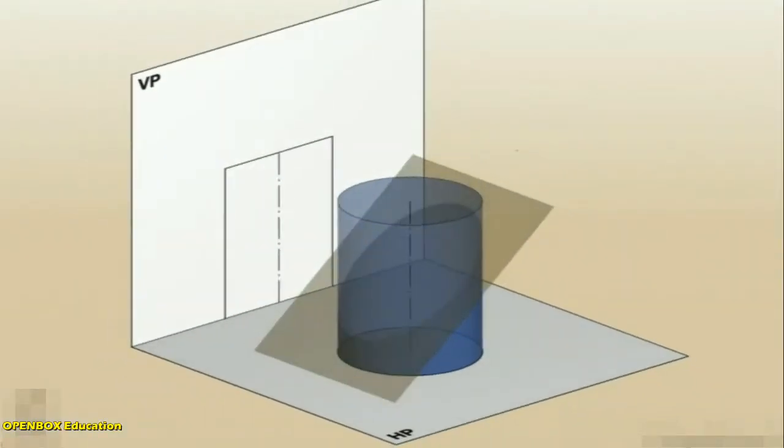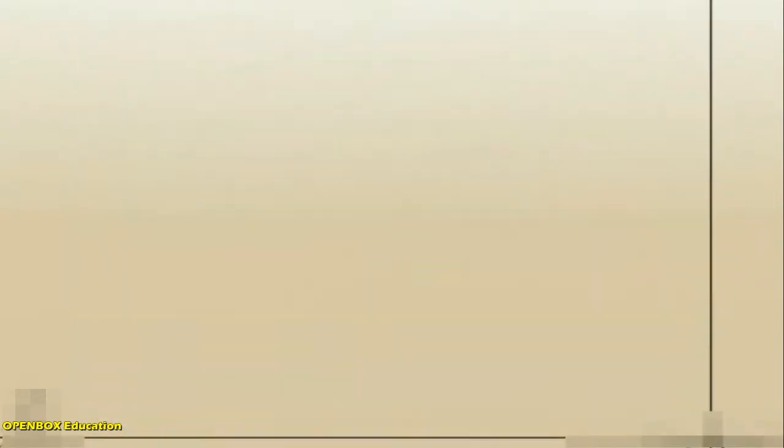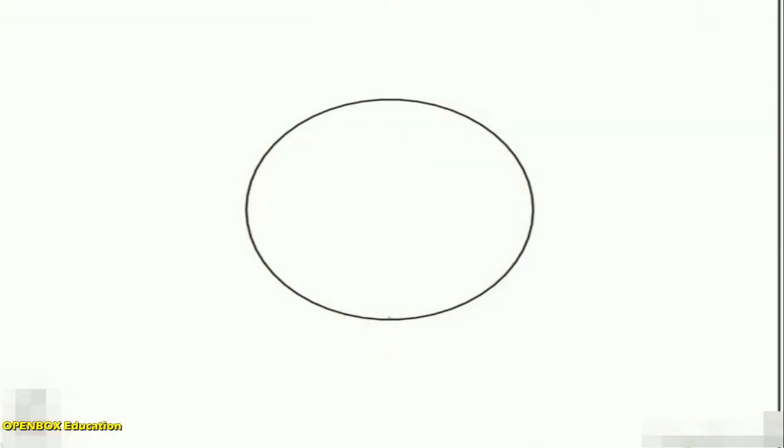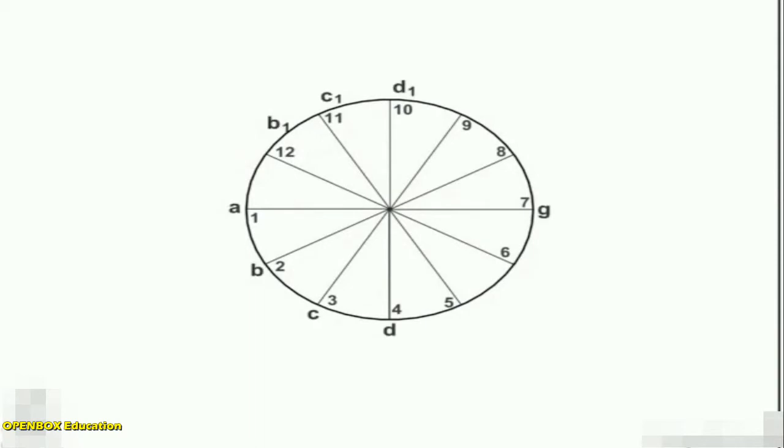As the cylinder has no edges, a number of lines representing the generators may be assumed on its curved surface by dividing the base circle into, say, 12 equal parts.